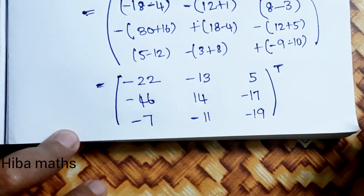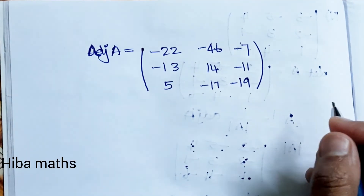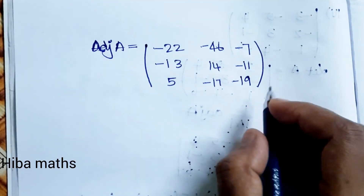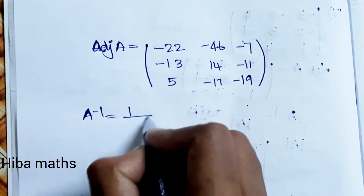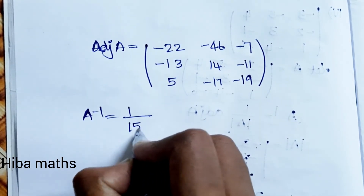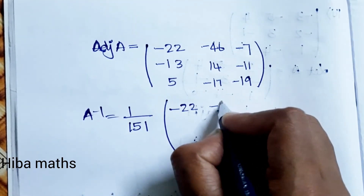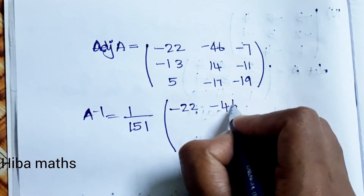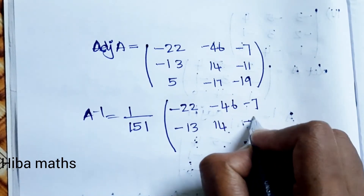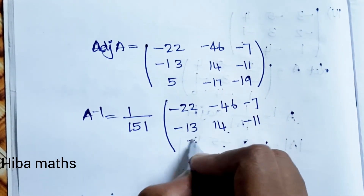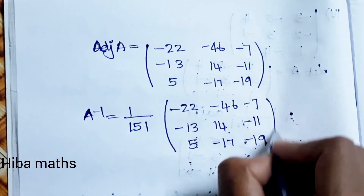Transposing the cofactor matrix to get the adjoint of A. Then substituting into A inverse = (1/151) × adjoint of A. The final answer is A inverse = (1/151) × [-22, -46, -7; -13, 14, -11; 5, -17, -19]. This is our answer.